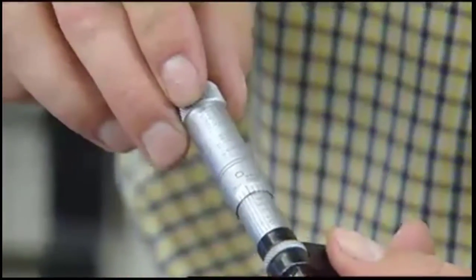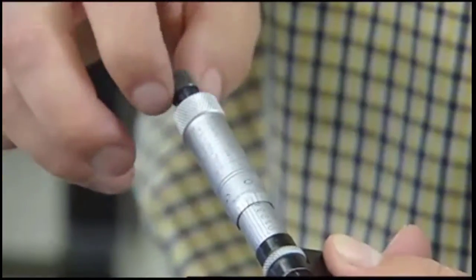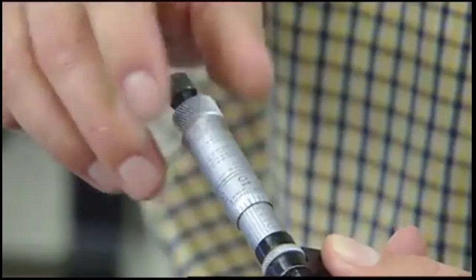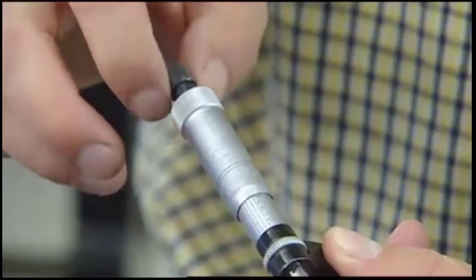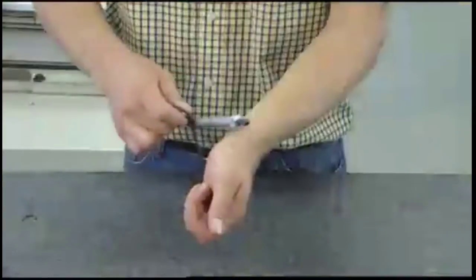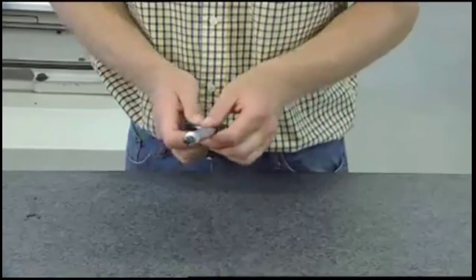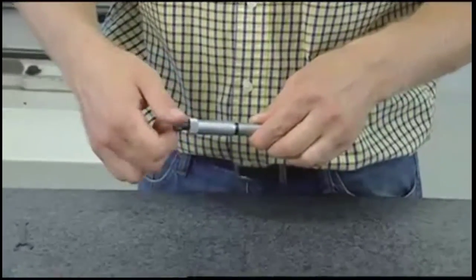Next, check the spindle for smooth, free rotation. The fit of the spindle threads should not be too loose, but should rotate effortlessly. If the spindle threads feel loose, open the micrometer spindle far enough to expose the threads.